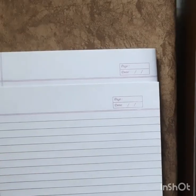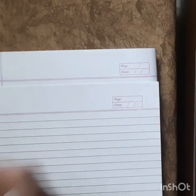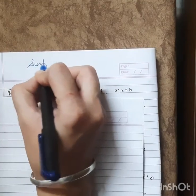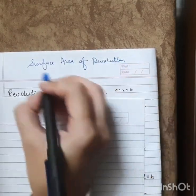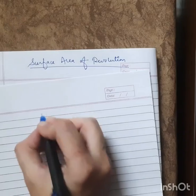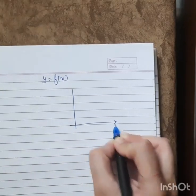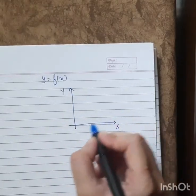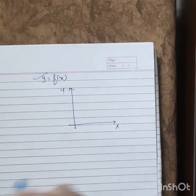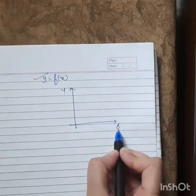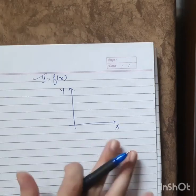Hello students, this is our second video on the topic application of definite integral. The application we are going to study today is surface area of revolution. Basically, what this topic is about: we are given a curve y = f(x) in a coordinate system with x-axis and y-axis, and we need to revolve that curve either about the x-axis or about the y-axis.